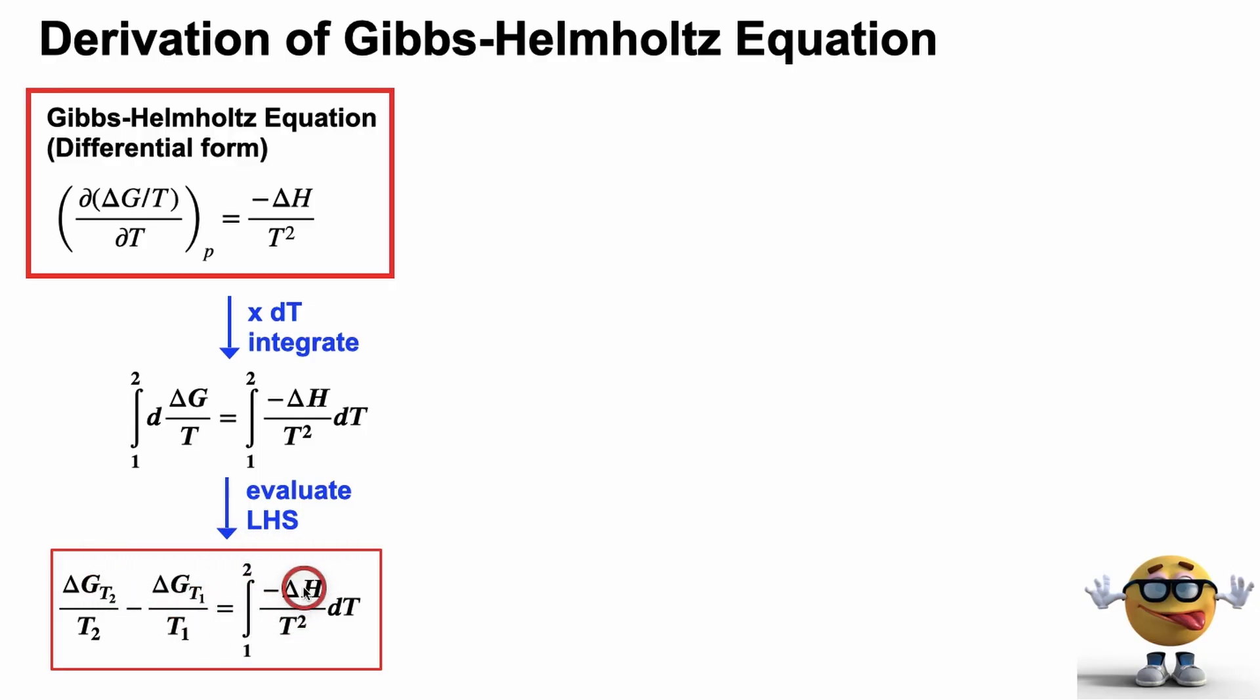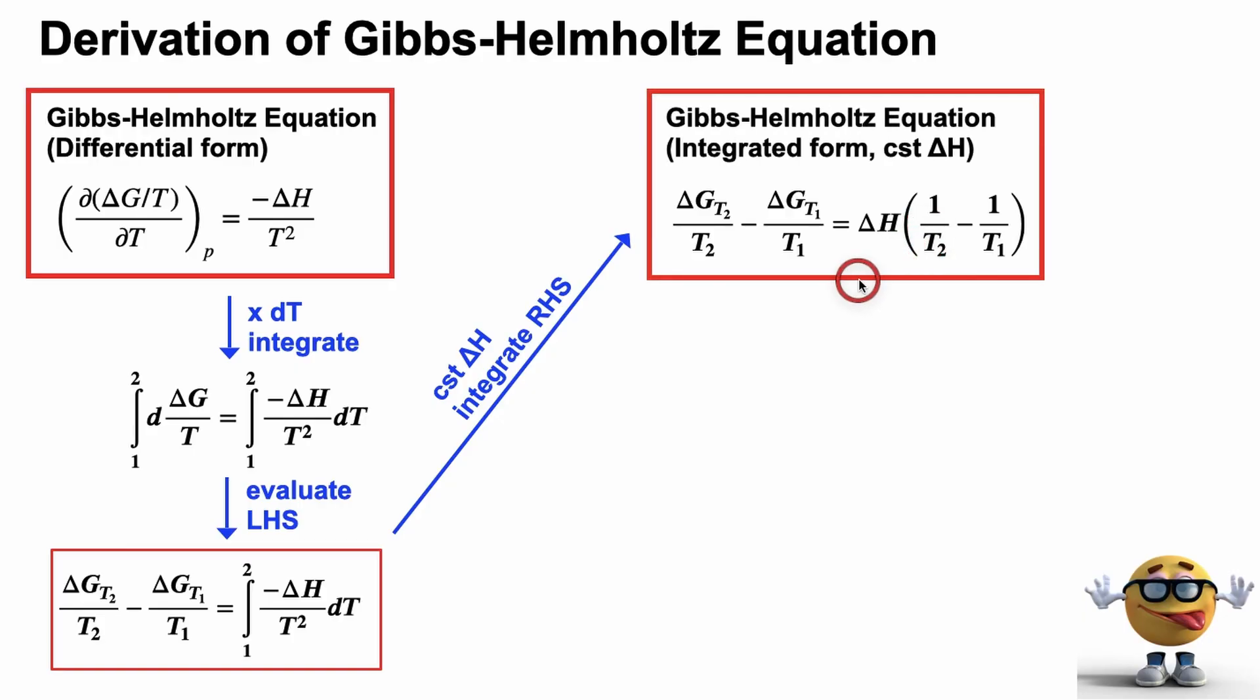Now this is useful if your enthalpy change depends on temperature, which it always does. So we would need an equation and integrate that. However, on an exam, we may assume that delta H is constant. So we can yank it out of the integral if it's a small temperature range, even though delta H does change, we could assume it's constant, yank it out of the integral right here, and integrate the integral of negative one over T squared is one over T, T2 minus T1. And this, my friends, is our Gibbs-Helmholtz equation in the integrated form, assuming constant enthalpy, and all those other things.